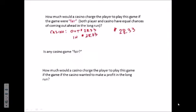However, is any casino game going to be fair? Well, the answer is no, because the casino is a business. It has to pay its bills, plus it has to make a profit. So no casino game is fair. Therefore, how much would a casino charge the player to play this game if the casino wanted to make a profit in the long run? Well, if the casino is going to make a profit and it knows it pays out $28.33 on average per play, it's going to have to charge some amount more than $28.33 per play.